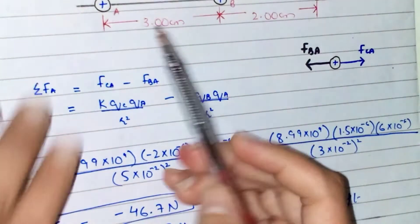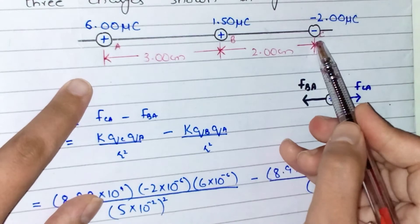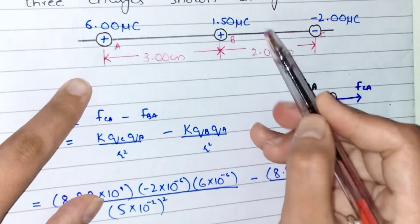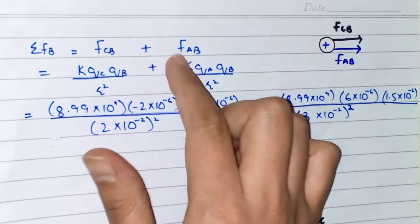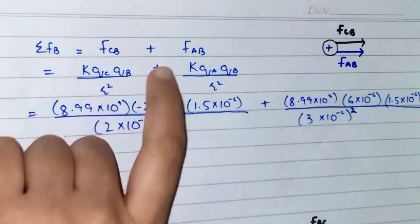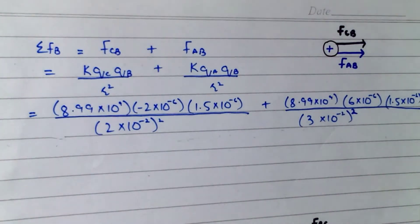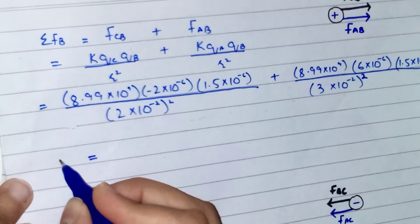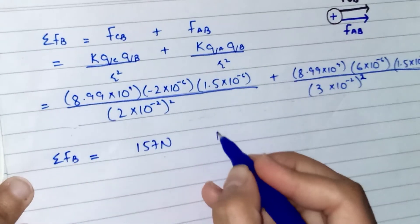Now for charge B: charge A, being positive, repels charge B in one direction, and charge C, being negative, attracts charge B towards itself — both forces point in the same positive x-direction. So the sum of forces on B equals F_CB plus F_AB, which gives K·Q_C·Q_B / r² plus K·Q_A·Q_B / r². Plugging in all values in standard units, the sum of all forces on charge B is 157 Newtons, directed towards the right.